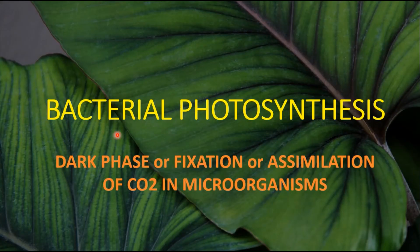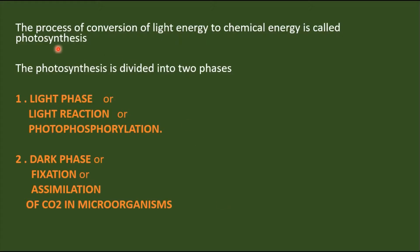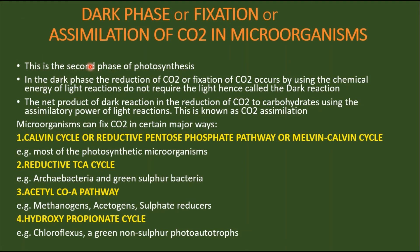In the topic of bacterial photosynthesis, we have learned about the light phase, oxygenic photosynthesis, and anoxygenic photosynthesis in the previous parts. Now in this part, we are going to discuss the dark phase, or fixation or assimilation of carbon dioxide in microorganisms. As we know, the process of conversion of light energy to chemical energy is called photosynthesis, and photosynthesis is divided into two phases: light phase and dark phase.